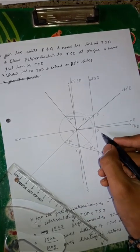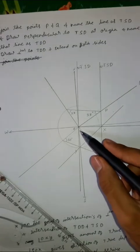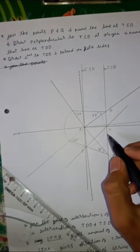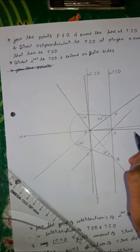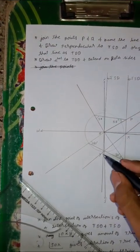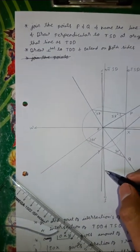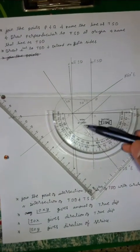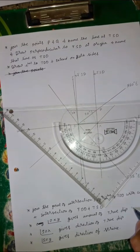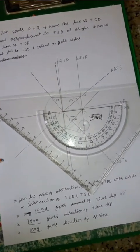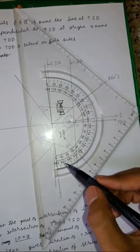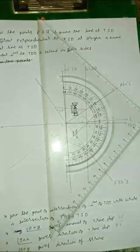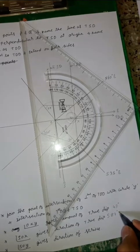Join these two points. Now, the angle OXY gives the amount of true dip, and the angle SOX gives the direction of true dip. Angle OXY is 43 degrees — this is the true dip. Now measure the angle SOX. It is found to be 87 degrees. This is the direction of dip, meaning south 87 degrees east.